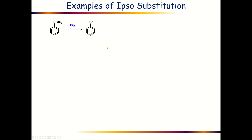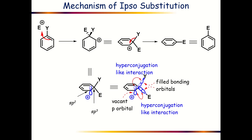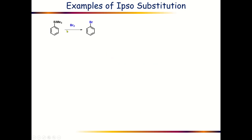Now let us consider some examples of ipso substitution reactions — in each case the mechanism will be exactly similar as we have just discussed. The first example is the treatment of trimethylsilyl benzene with molecular bromine, where bromo-desilylation takes place. The bromine is attacking this ipso carbon atom and thereby replacing this trimethylsilyl group, causing an ipso substitution reaction.